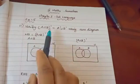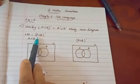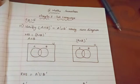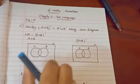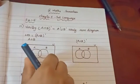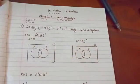First, the LHS is (A intersection B) whole complement. So you will need 2 Venn diagrams - the first one for A intersection B whole complement.